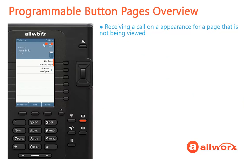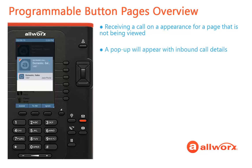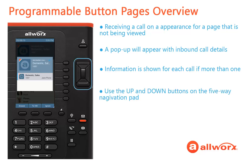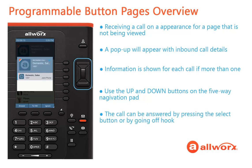If you are receiving a call for an appearance on a page that is not being viewed, there will be a slightly different workflow. A pop-up menu will be shown providing information about the inbound call, with information shown for each call if more than one inbound call is ringing. Use the up and down buttons on the five-way navigation pad to select which call to answer, send to voicemail, or ignore. The call can be answered by pressing the select button, going off-hook by lifting the handset, or pressing the speaker button.